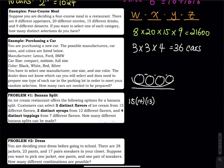For syrup, there are 12 options and I pick three distinct. The first choice gives 12 options, then 11, then 10 — so three distinct syrups: 12 times 11 times 10. For toppings, I pick four distinct from seven. The first topping gives seven options, then six, then five, then four. So four distinct toppings: 7 times 6 times 5 times 4.